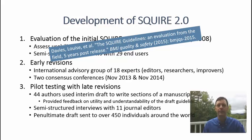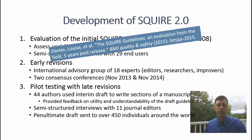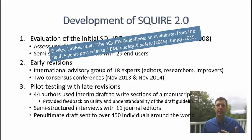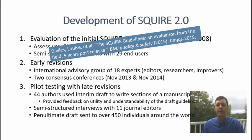We then embarked on early revision — step two. We had an international advisory group of 18 experts: editors, researchers, and improvers. These individuals, plus additional invitees, came together at two consensus conferences in November 2013 and 2014. Through this process we rewrote the guidelines, gathered feedback, discussed the future of academic and scholarly QI work, and really wanted the new guidelines to meet and match where the field of quality improvement was headed.